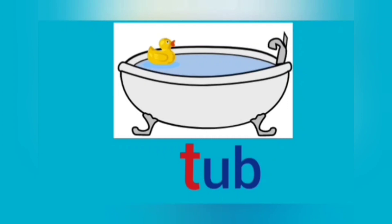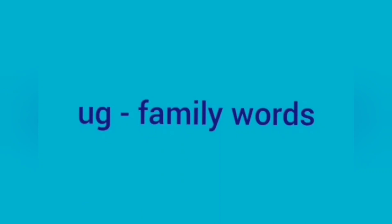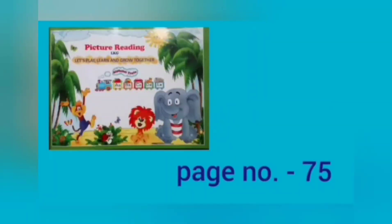A wide open, deep container with a flat bottom for holding water is a tub. UG family words: U sounds A, G sounds G, U and G together sounds UG. Let us see a few pictures in our picture reading book on page number 75.